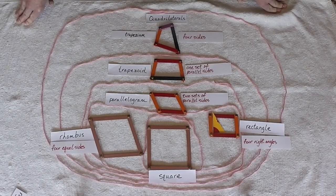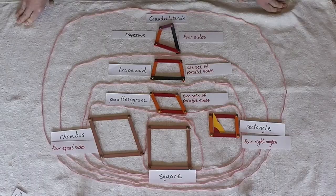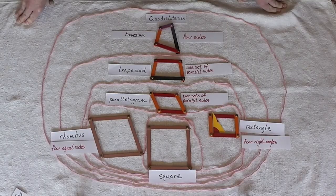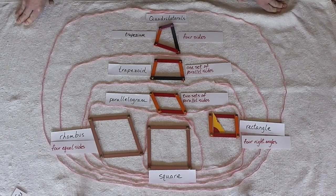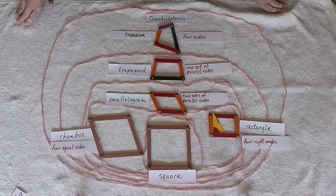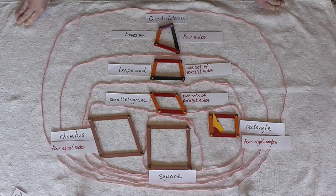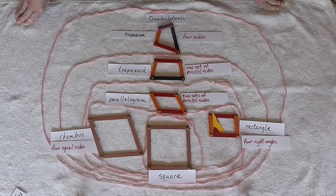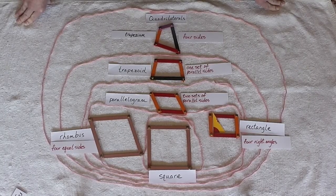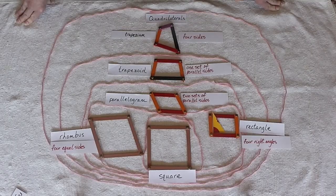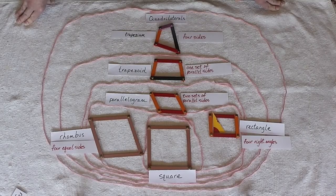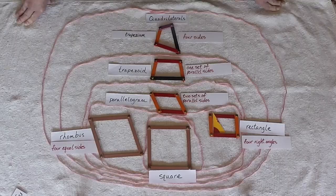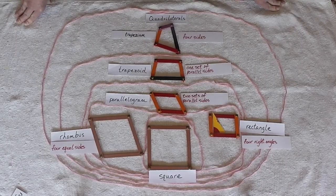A square can be a rhombus. But can a rhombus be a square? You've got to think about what's different here. Our square has four equal sides, just like a rhombus. But our square has four right angles. Our square also has two sets of parallel sides. So a square can be a parallelogram. But a parallelogram cannot be a square. A rhombus can be a parallelogram. But a parallelogram cannot be a rhombus.